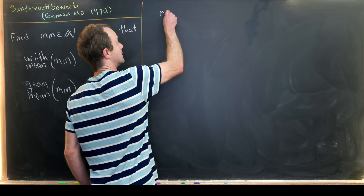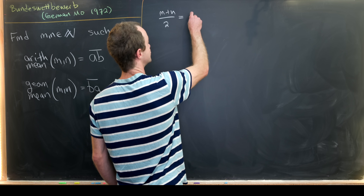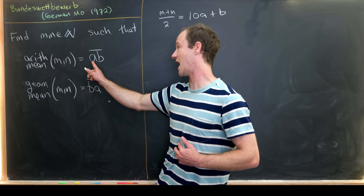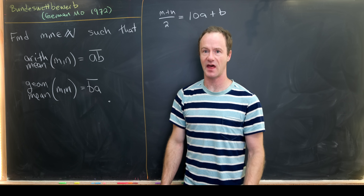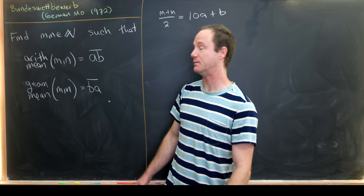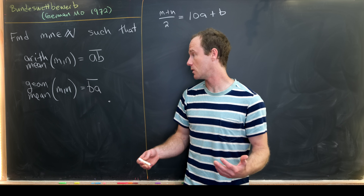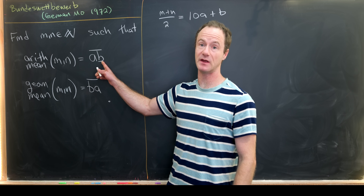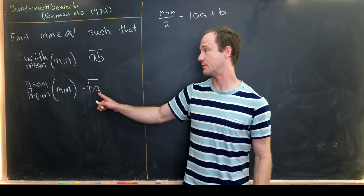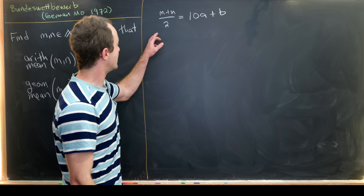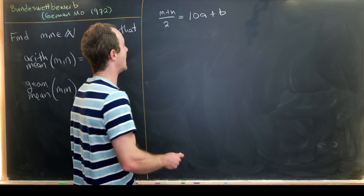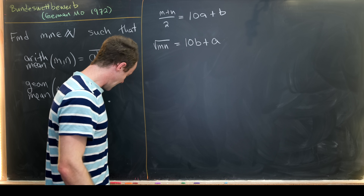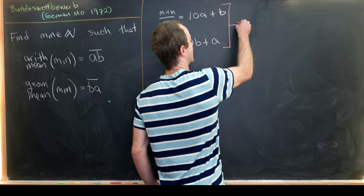The arithmetic mean is (m+n)/2, so we know (m+n)/2 = 10a+b, because in digit notation 'ab' with an overline means the tens digit is a and the ones digit is b. Since both are two-digit numbers, a is from 1–9 and b is from 1–9 (neither can be zero). The geometric mean √(mn) equals 10b+a.